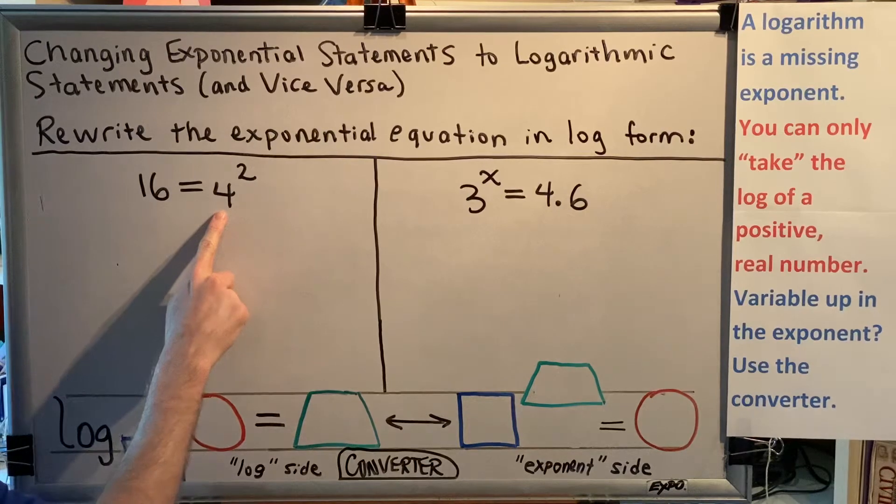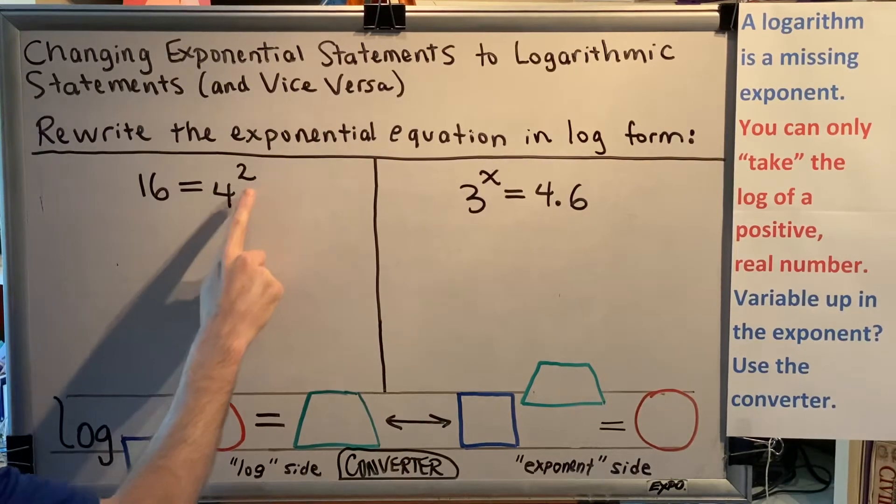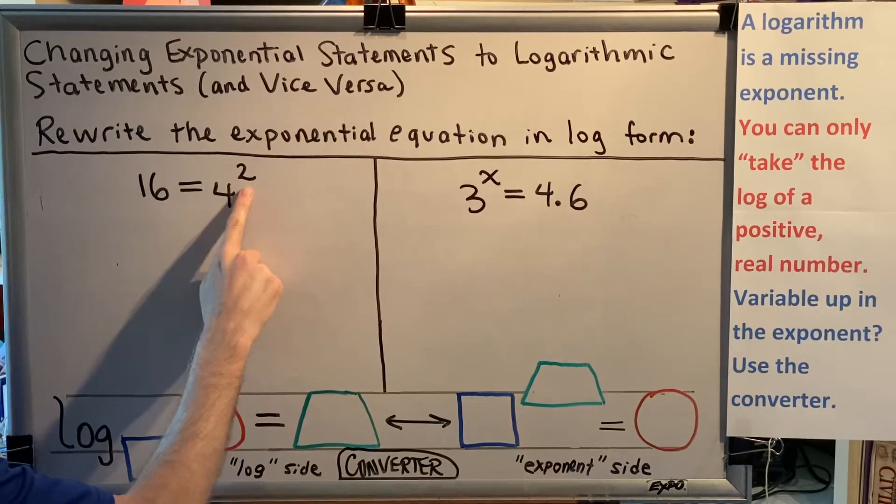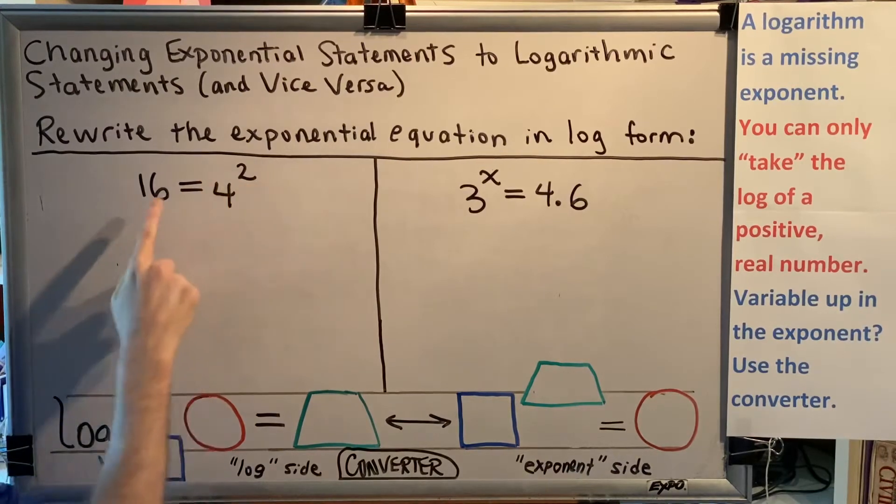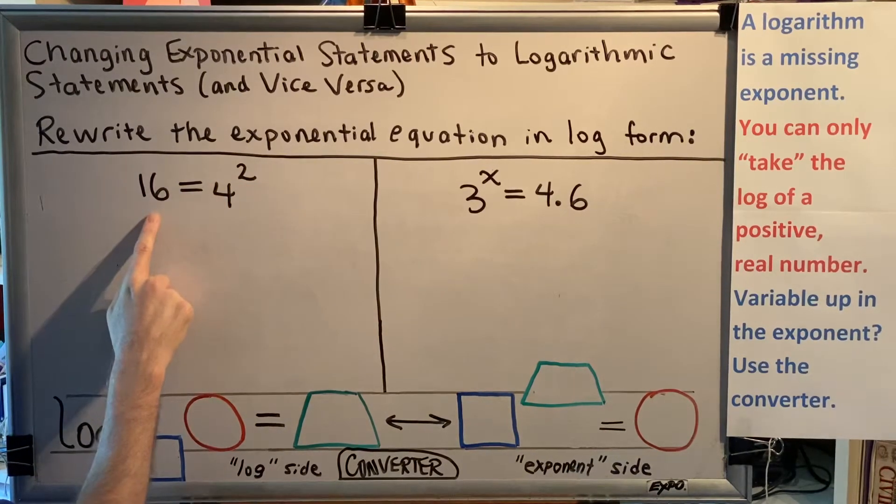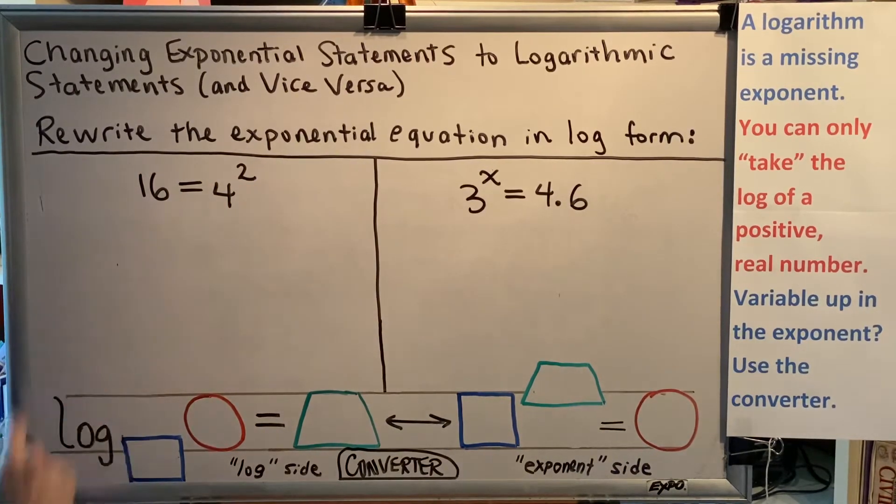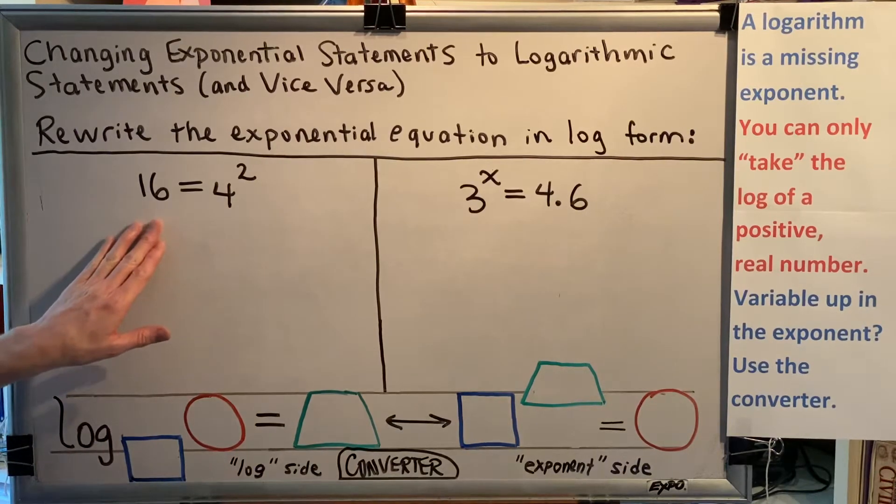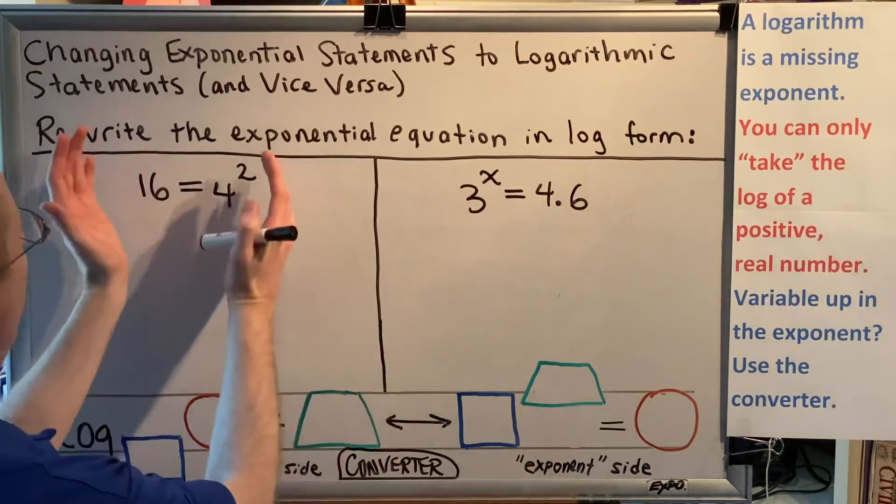What is the four called? The base. What is the two called? The exponent. What is the 16 called? The argument. This is an exponential statement. It doesn't contain the word log, so we're going to take this equation and put it in the exponent side of our converter.